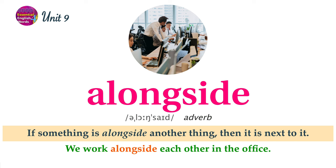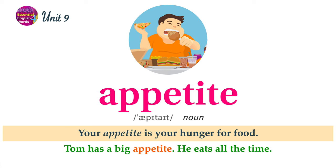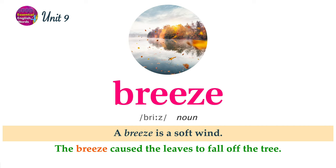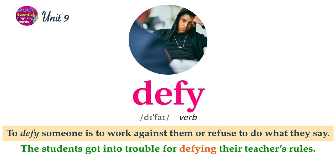Unit 9 Word List. If something is alongside another thing, then it is next to it. We work alongside each other in the office. Your appetite is your hunger for food. Tom has a big appetite. He eats all the time. To assist someone is to help them. Andrew assisted me with my homework. A breeze is a soft wind. The breeze caused the leaves to fall off the tree. To defy someone is to work against them or refuse to do what they say. The students got into trouble for defying their teacher's rules.